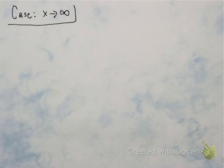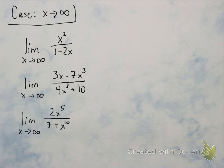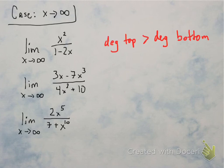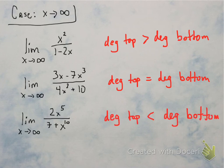Now let's talk about infinite limits — as x approaches infinity. For example: limit as x approaches infinity of x squared over 1 minus 2x, or the other examples here. In the first case, the degree of the top is bigger than the degree of the bottom, so when x gets really big, the top is way bigger than the bottom. In the second case, the degree of the top equals the degree of the bottom — you see x cubed on top and x cubed on bottom. In the last case, the degree of the top is smaller — x to the fifth on top but x to the tenth on bottom, so you divide by a way bigger number.